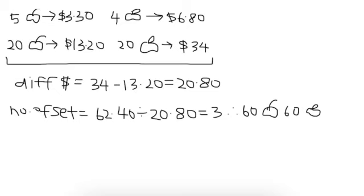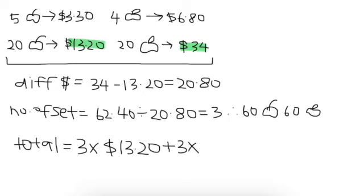Because you see the figures here, we know that 20 sets is this price. So the total would actually be equals to 3 times 13.20 plus 3 times 34. And this will give us a total of 141.60. And this will be the answer for this question.